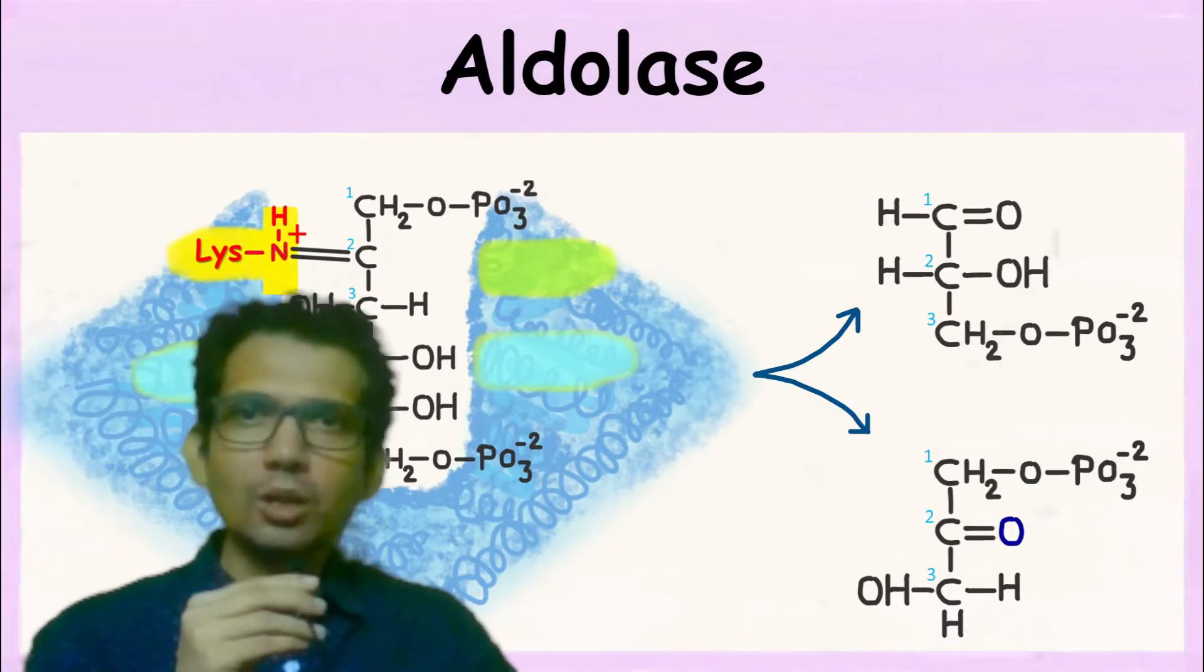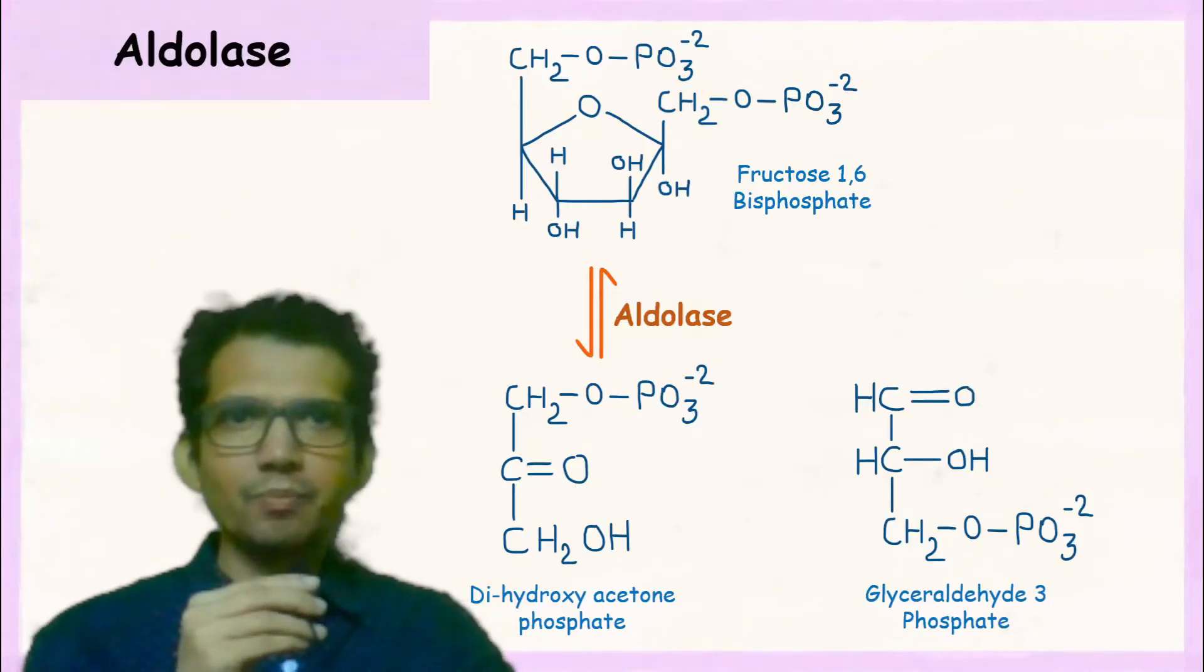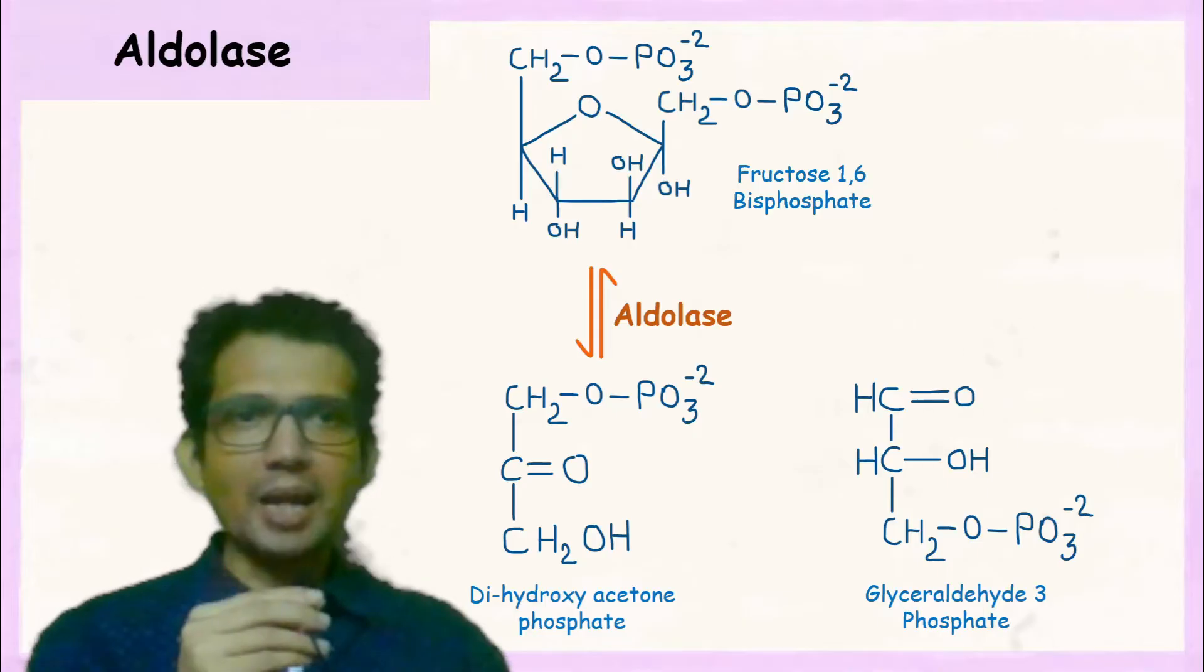Hi, let us talk about the enzyme aldolase. Aldolase is the enzyme that breaks fructose 1,6-bisphosphate into dihydroxyacetone phosphate and glyceraldehyde 3-phosphate.